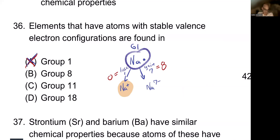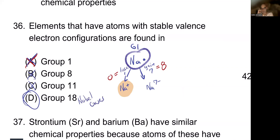Group 8 is not necessarily stable because it's in the middle of the D block and will generally become positive or negative. Group 11 is not stable either — it has a handful of valence electrons. Group 18 is the noble gases, and that is what makes something stable. The only stable elemental form is Group 18.